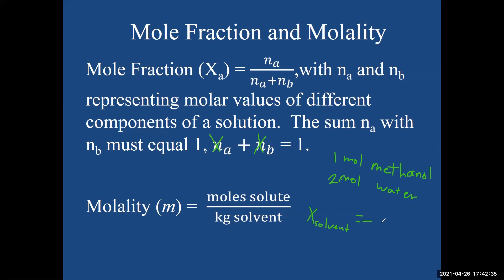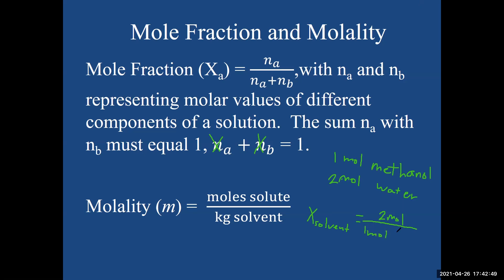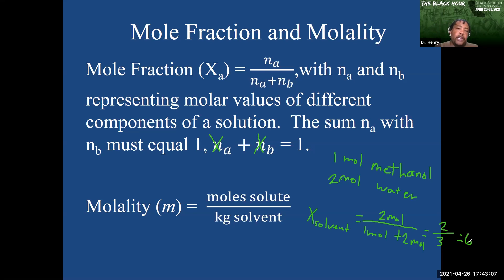Okay, so in that case it would be two moles over the sum. In this case we have one mole of methanol plus two moles of water. And since we have moles over moles, it's going to be unitless.